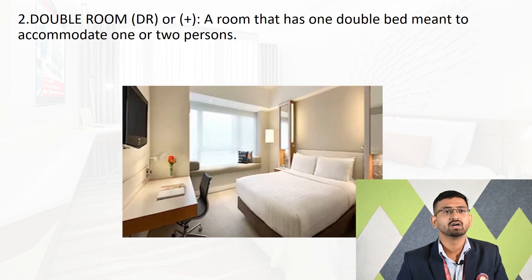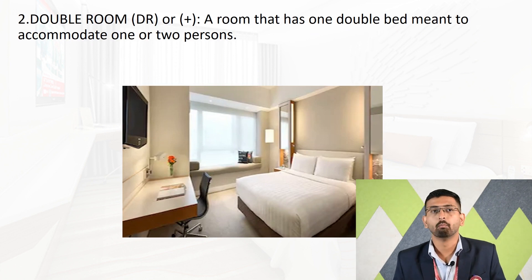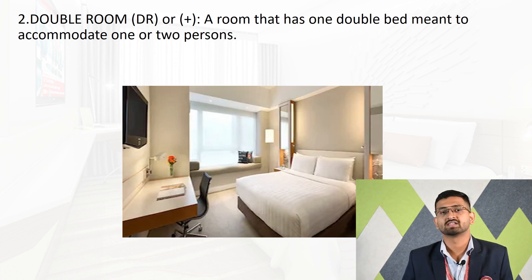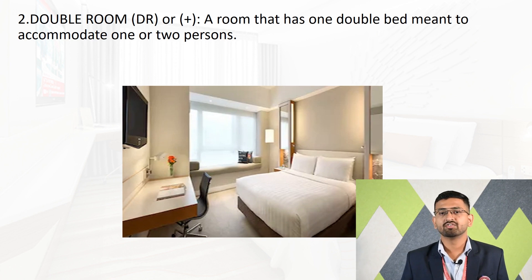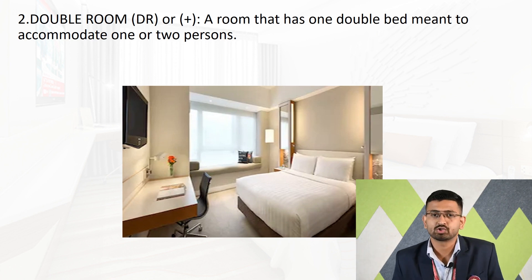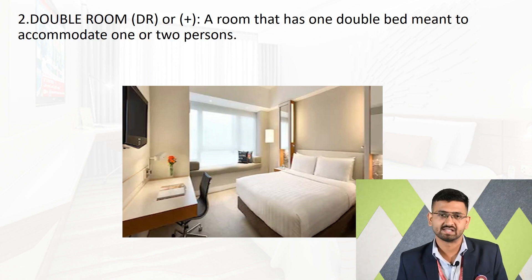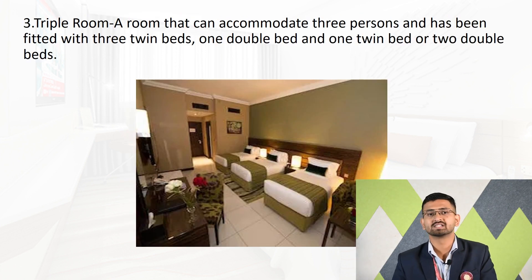Next is the double room — a room that has one double bed, meant to accommodate one or two persons. Usually we find a large-size bed in this guest room where one or two guests can be accommodated easily. That room is known as a double room.